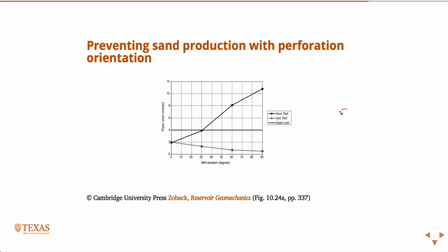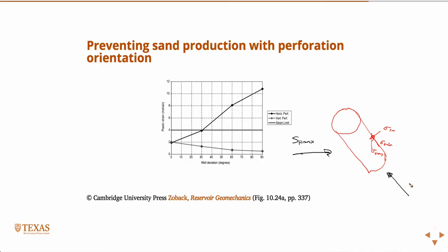If we look at a little section of the wellbore, our three principal stresses are the minimum and maximum tangential stresses — sigma t max and sigma t min — and sigma rr. Then you have far-field horizontal stresses acting on the wellbore, and depending on the angle of deviation, the effect of horizontal stresses on the components of these stresses changes.